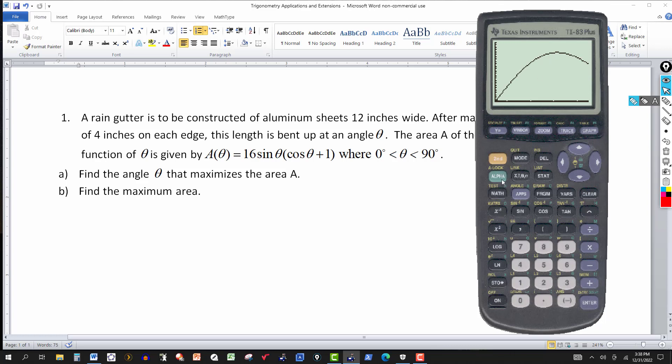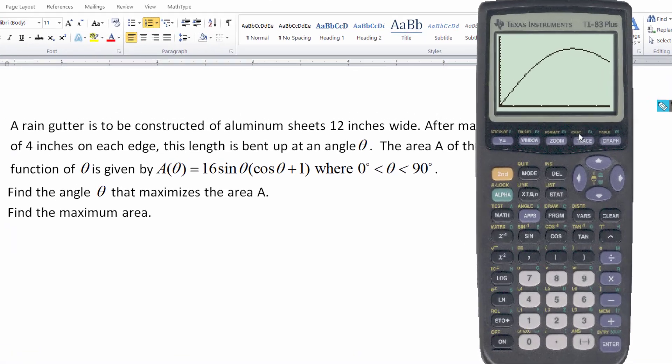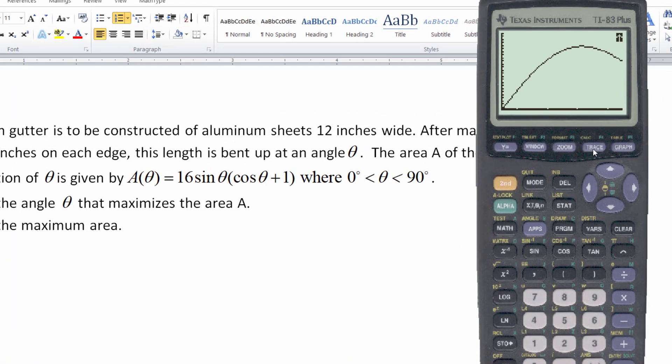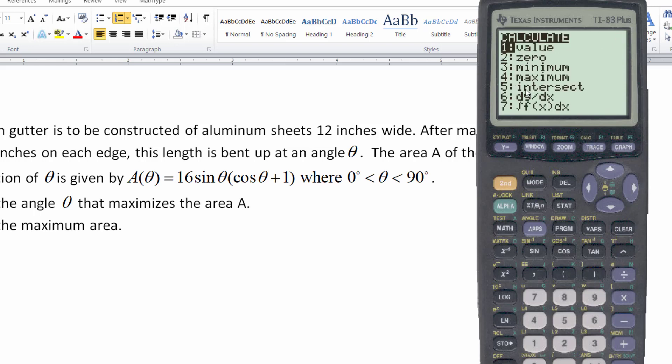So here's what we do in the calculator. I want to go to the calculate menu. So I hit 2nd and then hit the trace key. That gives me the calculate menu. And here we have several items we can pick from depending on what you want to find or do. I want to maximize, so I hit 4. So notice, left bound. So I want to move that cursor. So hit the arrow key here just to the left of that high point.